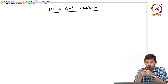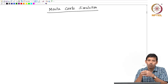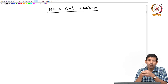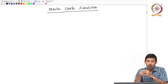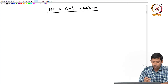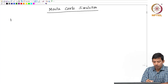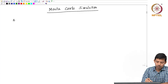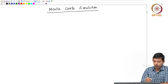I briefly touched upon Monte Carlo simulation, and here I will specifically look at the Metropolis Monte Carlo algorithm — the Metropolis algorithm — which will guide us how to generate new conformations, new microstructures of a system. In the Metropolis algorithm, there are four important steps.